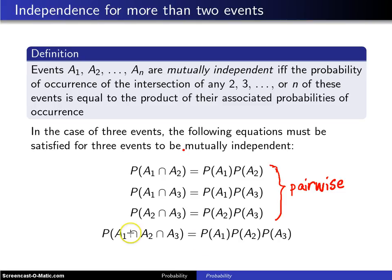And then finally, this last equation shows that the probability of the intersection of the three must be equal to the product of the individual probabilities for them to be mutually independent.